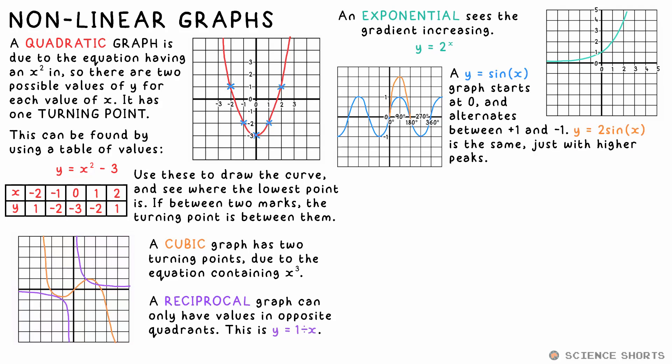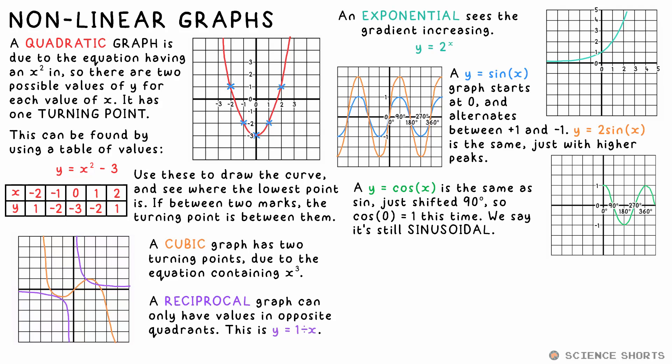If it's y equals two sine x, all that means is that the height of this wave goes up to two instead of one. A cos or cosine wave is just a sine wave shifted by 90 degrees. So it starts at one instead of zero.